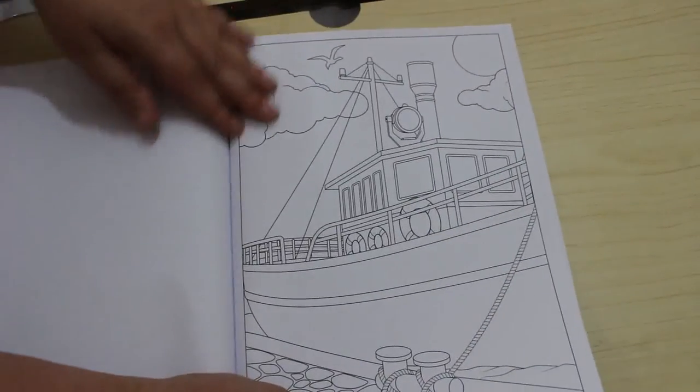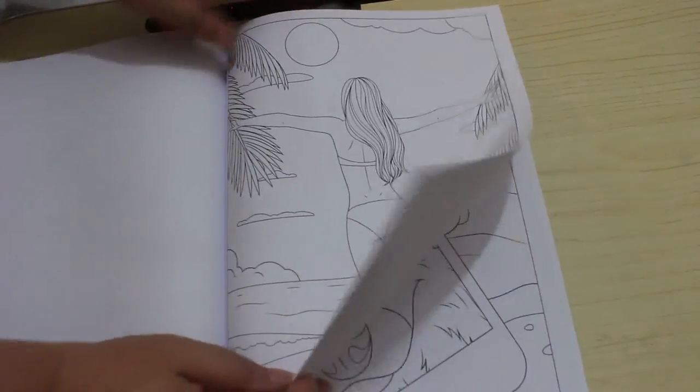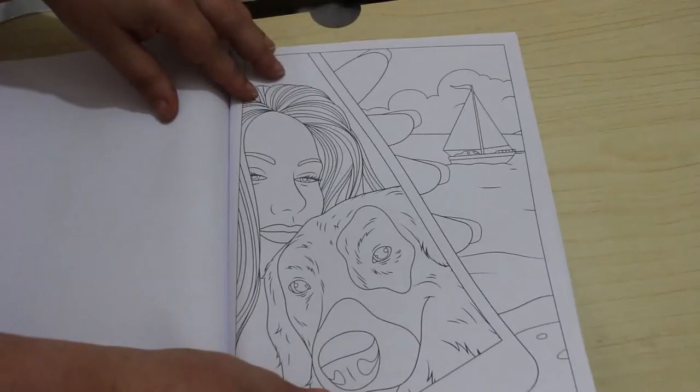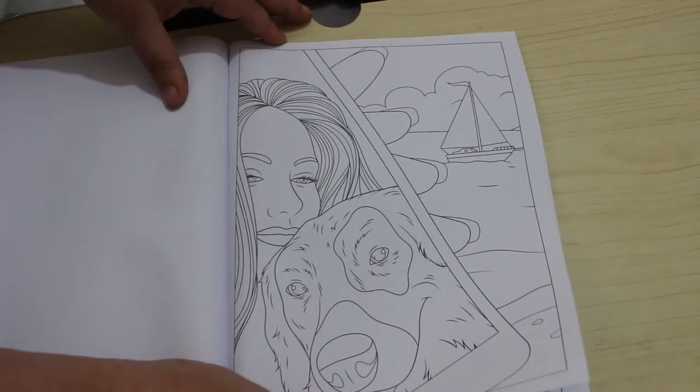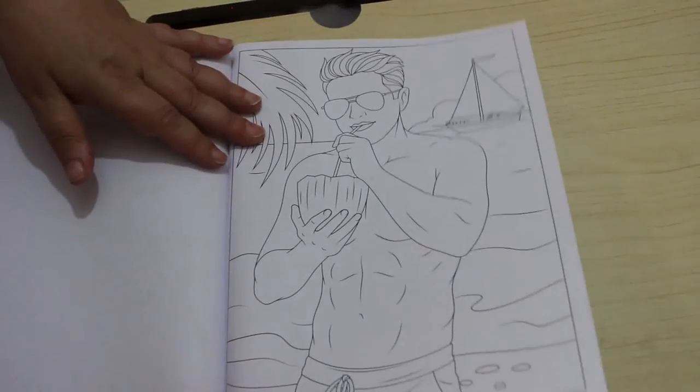That's a nice simple one. These ones are nice easy ones to color. And that one, she's looking at a picture of her and a dog on her phone and he's having a drink.